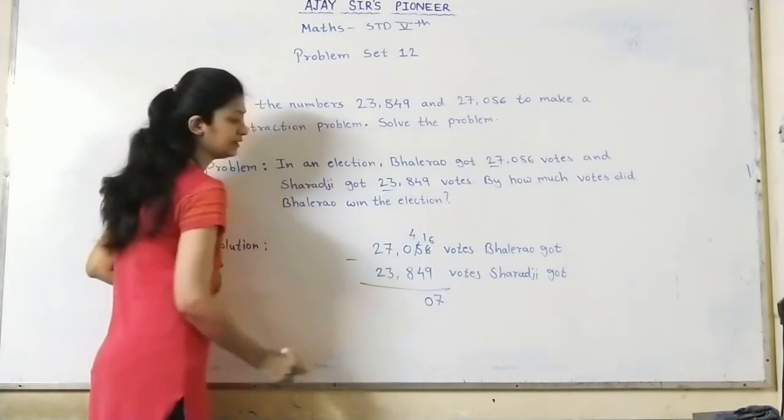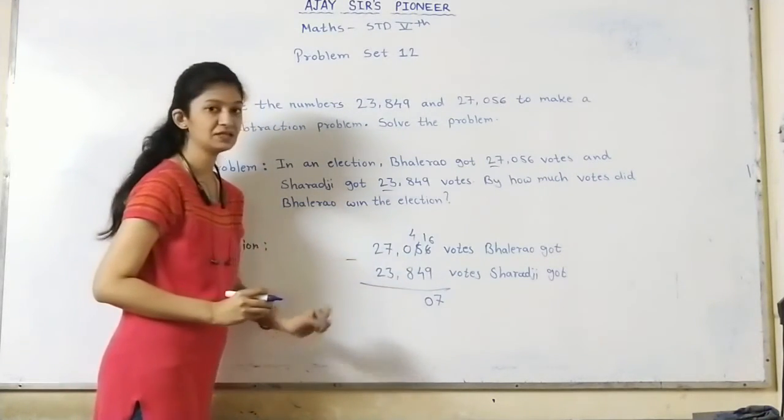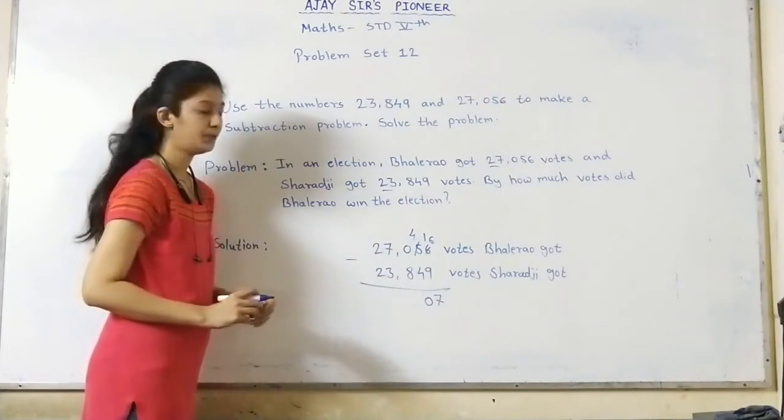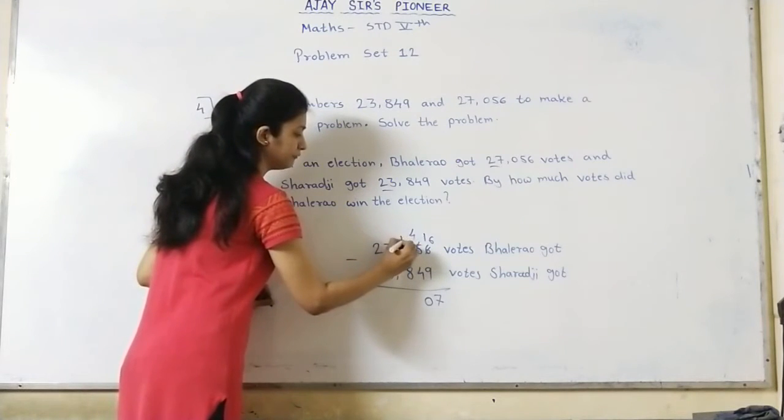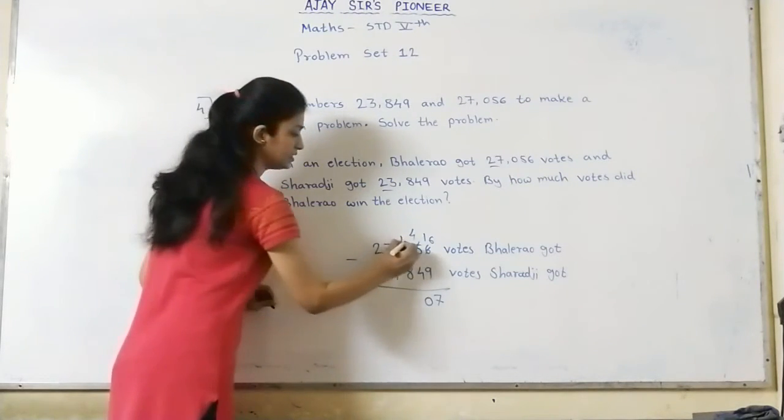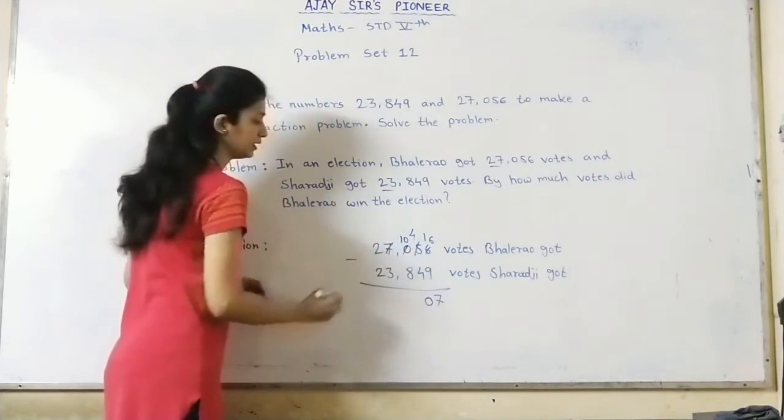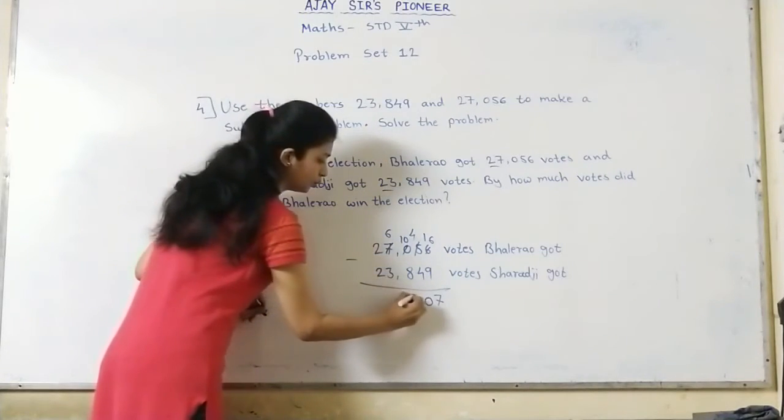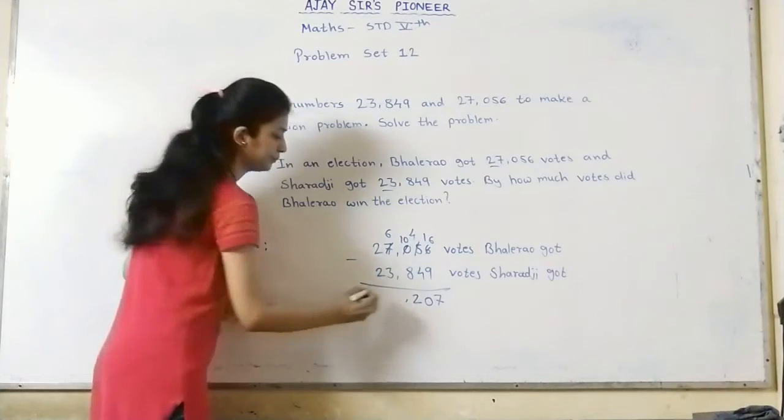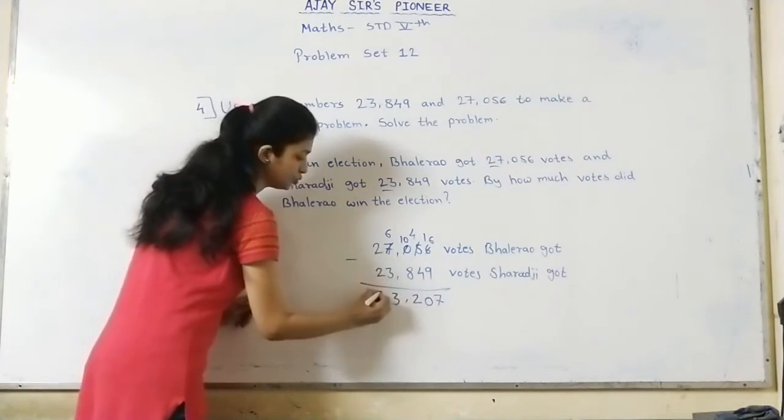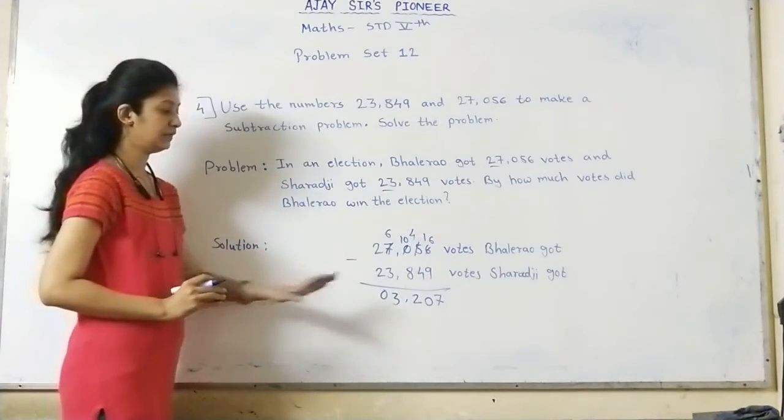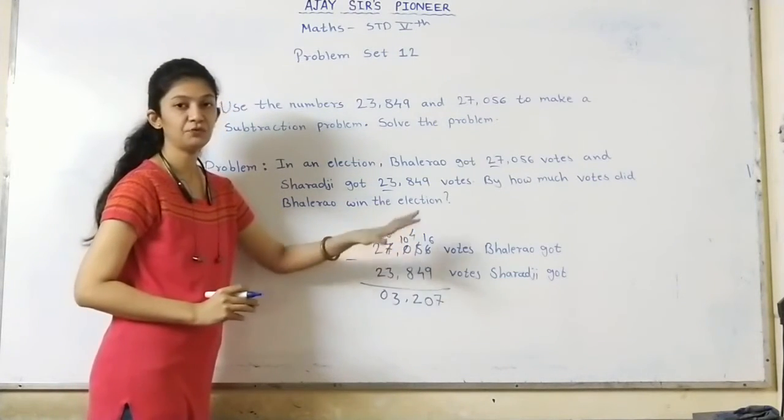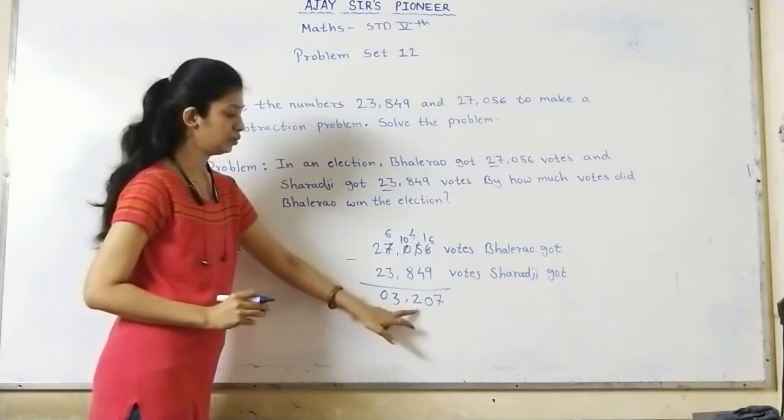Now 0 minus 8 in the hundreds place. Not possible. So borrow 1 from the thousands place and it becomes 10. And 7 minus 1 equals 6. Now 10 minus 8 equals 2. And 6 minus 3 equals 3. 2 minus 2 equals 0. So our answer is 3,207. The difference between votes is 3,207.